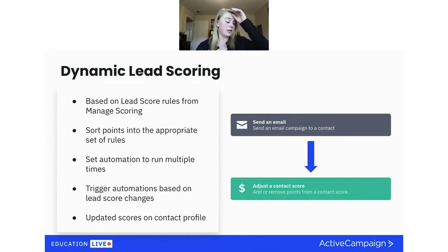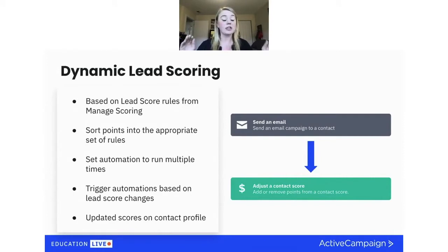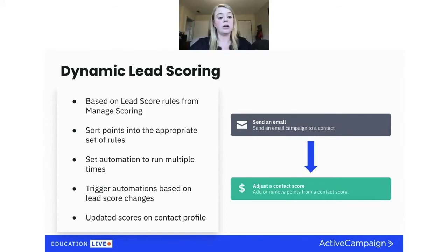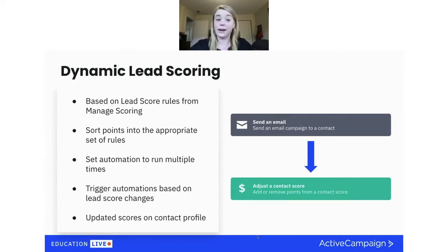You can also trigger automations based on lead score changes. For example, someone visits that pricing page and gets 20 points, then visits your checkout page — all of a sudden they have 70 points. You can trigger an automation if someone hits a high enough point threshold to alert someone. And those updated scores for each person show up on their contact profile, so you're always able to see what anyone's lead score is at any given time.